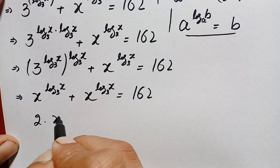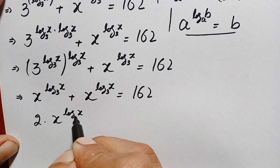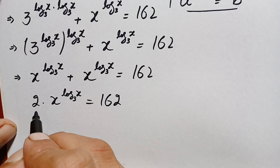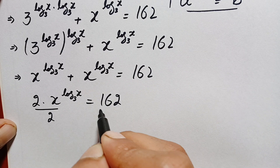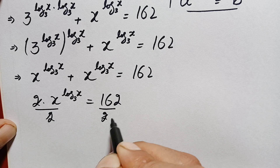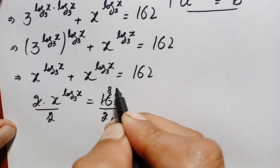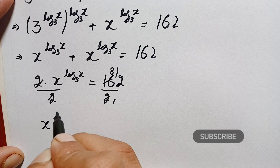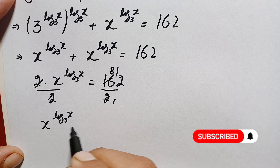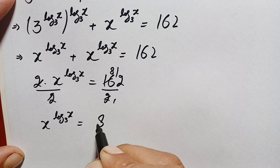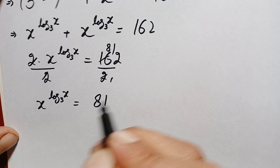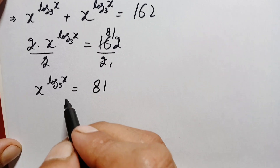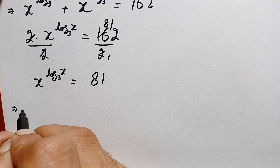Looking at the left hand side, both terms are the same, so we can write this as 2 times x raised to power log of x with base 3 equals 162, which simplifies to x raised to power log₃x equals 81.